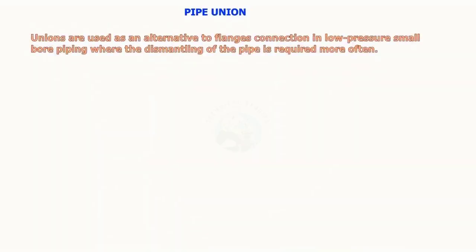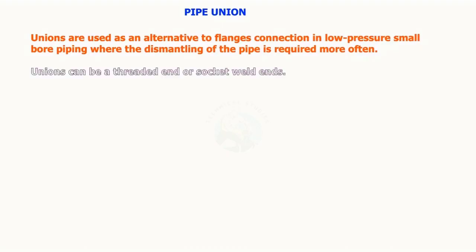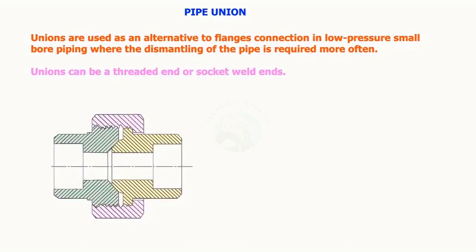Pipe unions are used as an alternative to flange connections in low pressure small bore piping where the dismantling of the pipe is required more often. Pipe unions can be threaded end or socket weld end.